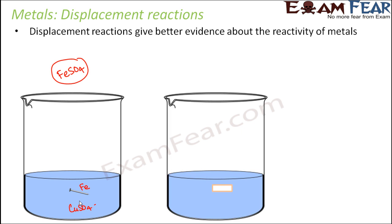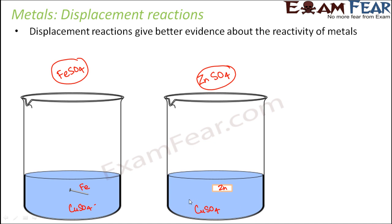Consider another example: you have a beaker with copper sulfate solution, and instead of iron you place a small piece or granule of zinc. In this case, after some time you also see the color change — the blue color fades. This is because a reaction occurs and zinc sulfate is formed. Due to the formation of zinc sulfate, the color of the copper sulfate solution fades.